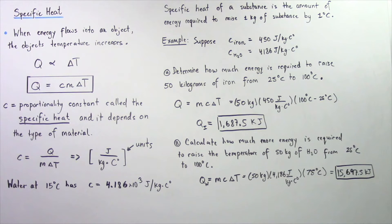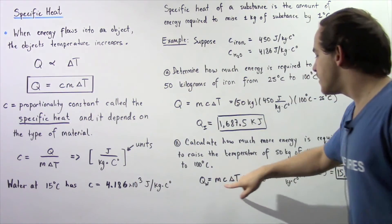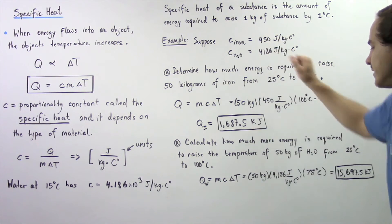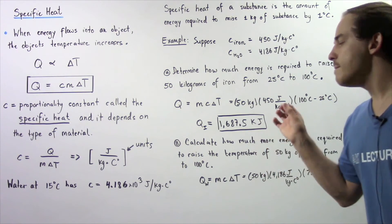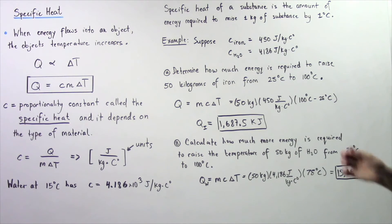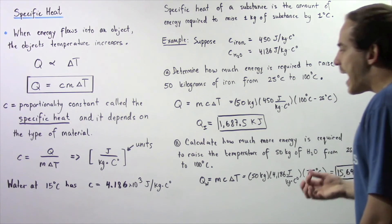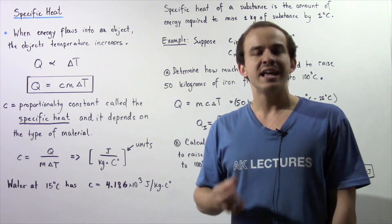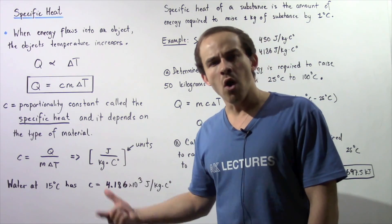Now let's move on to part B: calculate how much more energy is required to raise the temperature of 50 kilograms of water from 25 degrees Celsius to 100 degrees Celsius. We apply the same equation — mass is 50 kilograms, C is 4,186 joules per kilogram·°C, and delta T is again 75 degrees Celsius. Multiplying these values out, we find 15,697.5 kilojoules. To find the difference, we subtract the iron value, giving us 14,010 kilojoules — that's how many more kilojoules of energy are required to raise the temperature of water than iron.